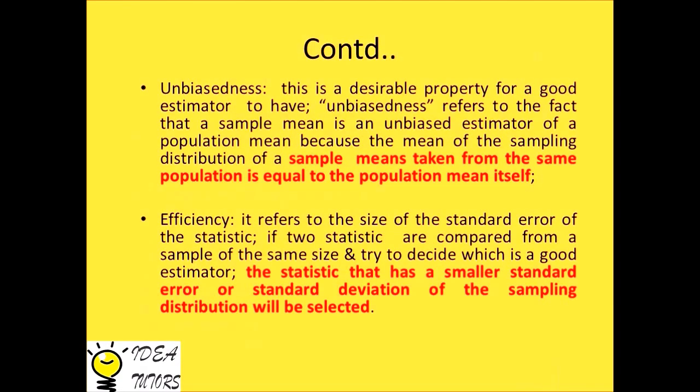Unbiasedness is a desirable property for a good estimator to have. Unbiasedness refers to the fact that a sample mean is an unbiased estimator of a population mean, because the mean of the sampling distribution of sample means taken from the same population is equal to the population mean itself.